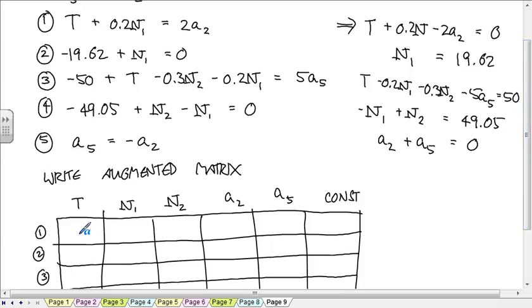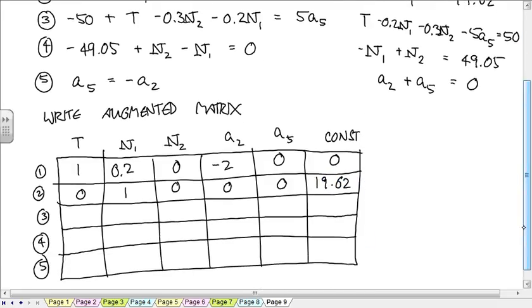The first row is 1, 0.2, 0, negative 2, 0, and 0 for a constant. The second equation is 0, 1, 0, 0, 0, positive 19.62. The third one says 1, negative 0.2, negative 0.3, 0, negative 5, 50. The fourth one says 0, negative 1, 1, 0, 0, 49.05. And the last one says 0, 0, 0, 1, 1, 0.